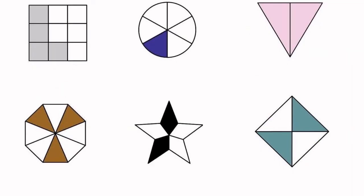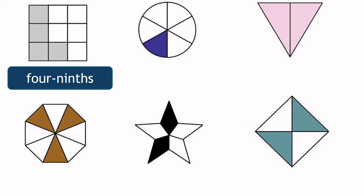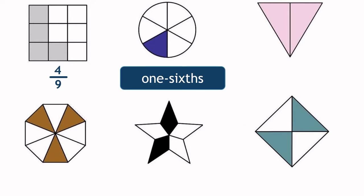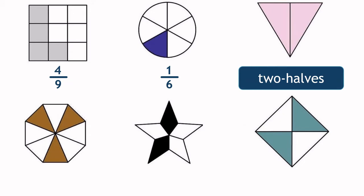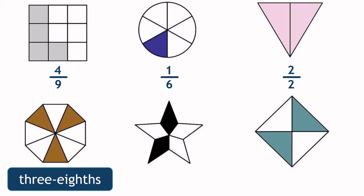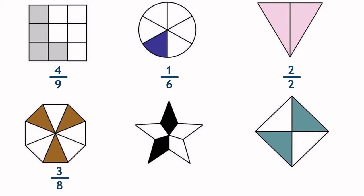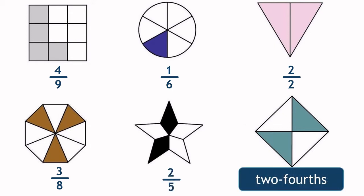The shaded parts of these shapes can be shown in fraction as four ninths, one sixth, two halves, three eighths, two fifths, and two fourths.